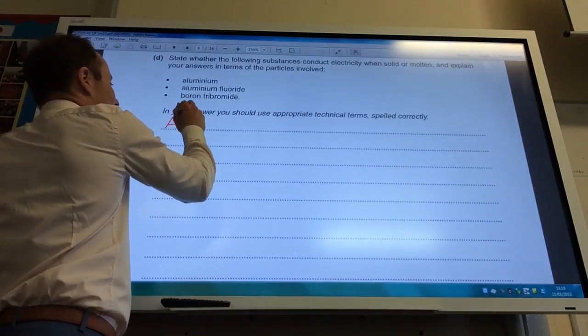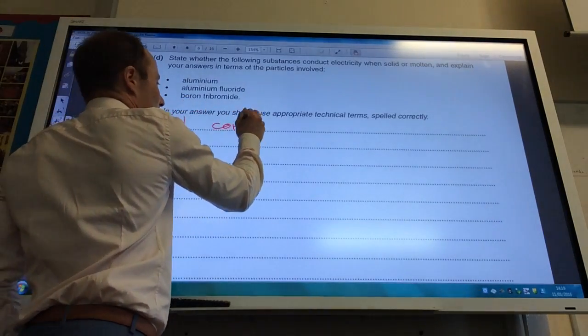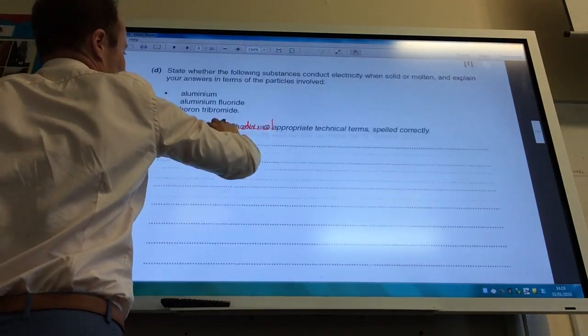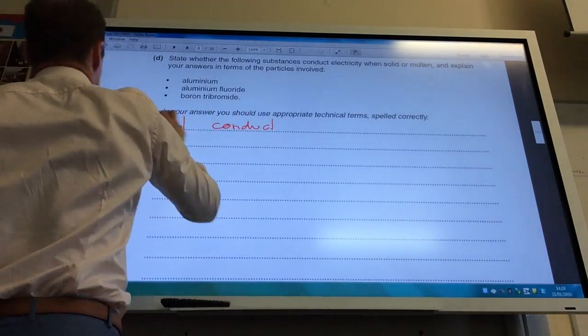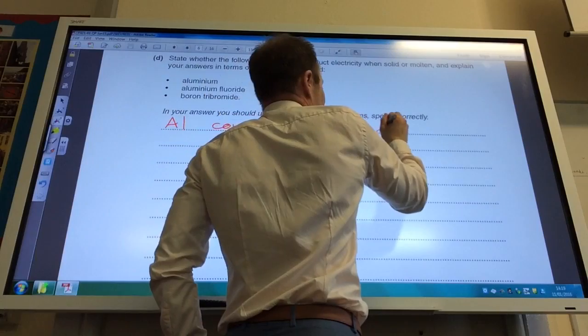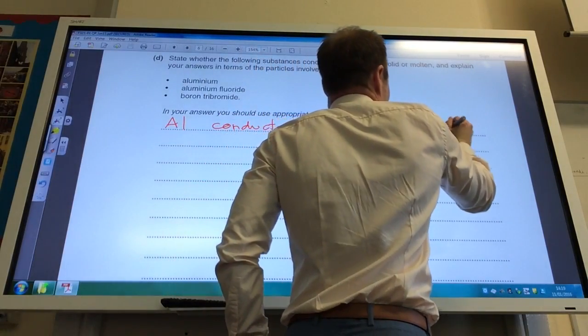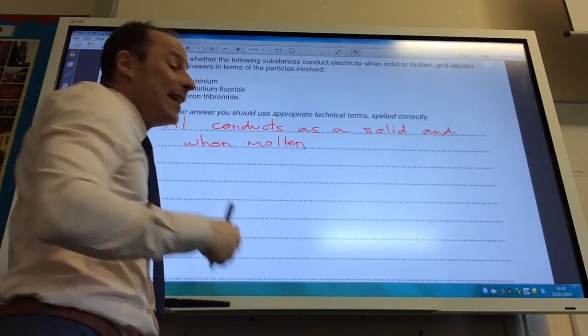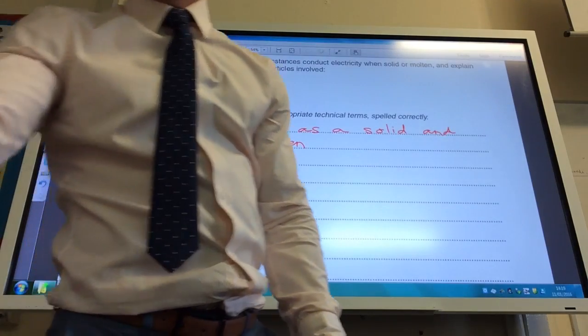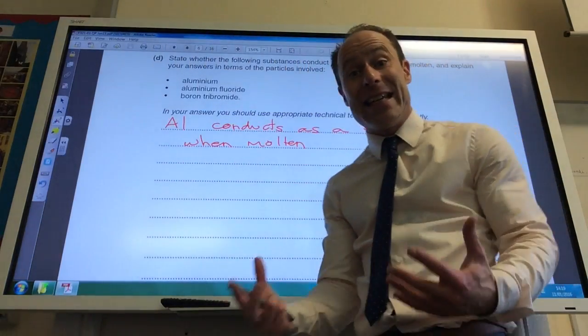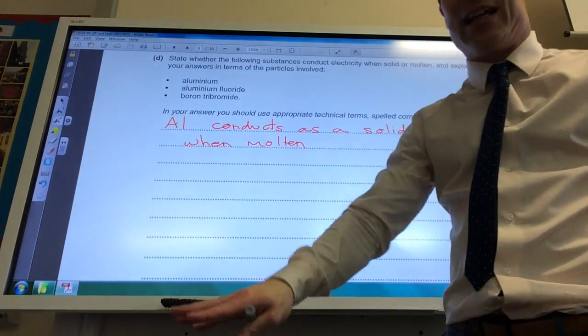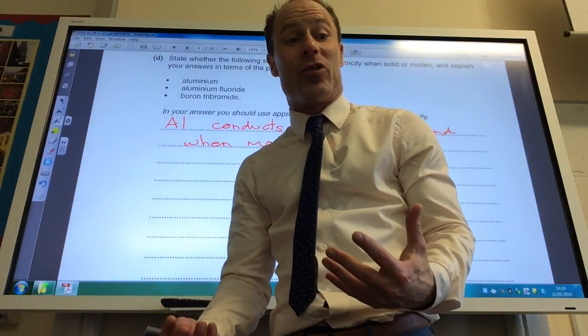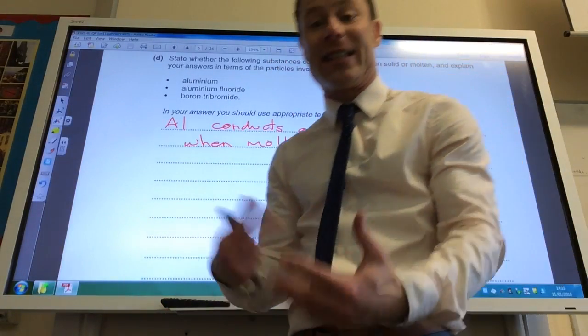Let's do aluminium. For aluminium it will conduct when it's solid and also when molten. Why is that? Well because aluminium is a giant metallic lattice which is made up of positive ions and a sea of delocalised electrons. The delocalised electrons can move both in the solid and as molten and so it will conduct electricity. So the key thing is the delocalised electrons, a sea of delocalised electrons can move.